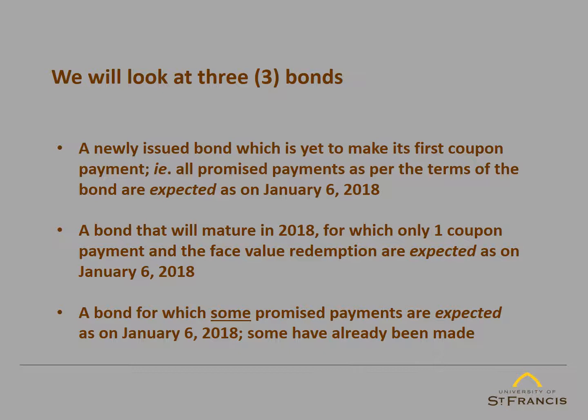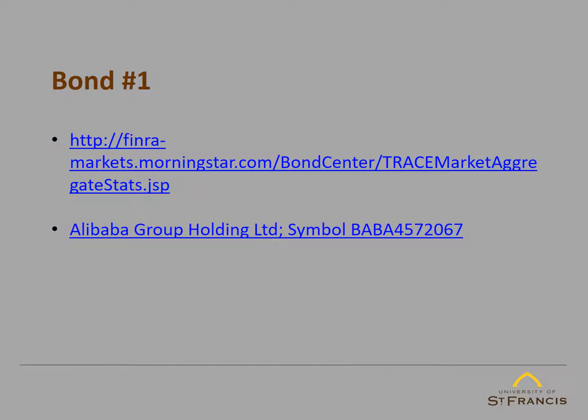The third bond we will look at is one that was also issued in the past and will mature at some point in the future. For this bond, some promised coupon payments have already been made and some residual payments are expected as on January 6, 2018. That's our plan for this video — looking at three different bonds and understanding what is expected and therefore contributes to the value of the bond today. The bond information we will use comes from FINRA, Financial Industry Regulatory Authority, as published in Morningstar. The first bond is issued by Alibaba Group Holding Limited.